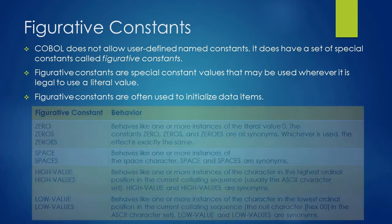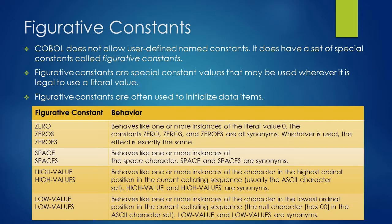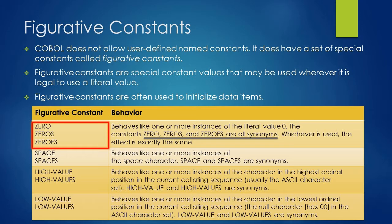Here is the list of figurative constants. The first figurative constant is ZERO. There are three variations: ZERO, ZEROS (with a single S), and ZEROES (with ES). All three are synonyms and the effect is exactly the same. They behave like one or more instances of the literal value zero.